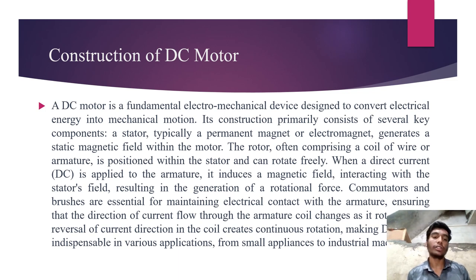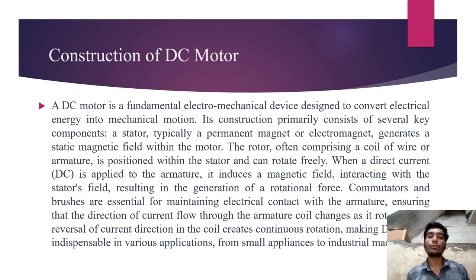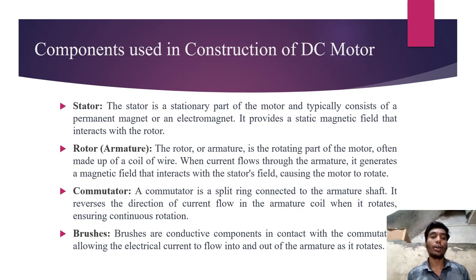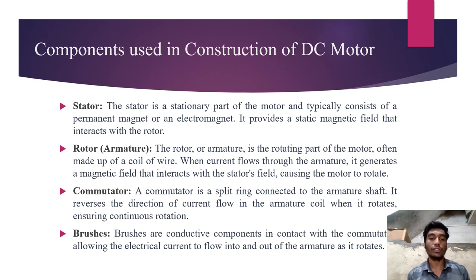The reversal of current direction in the coil creates continuous rotation, making it indispensable in various applications from small appliances to industrial machinery. The current is passed through the armature coils, which results in magnetic motion, and the permanent magnet also has magnetic motion — they both repel each other and the DC motor works. The main components used in the construction of DC motors are: stator, rotor, commutator, and brushes.